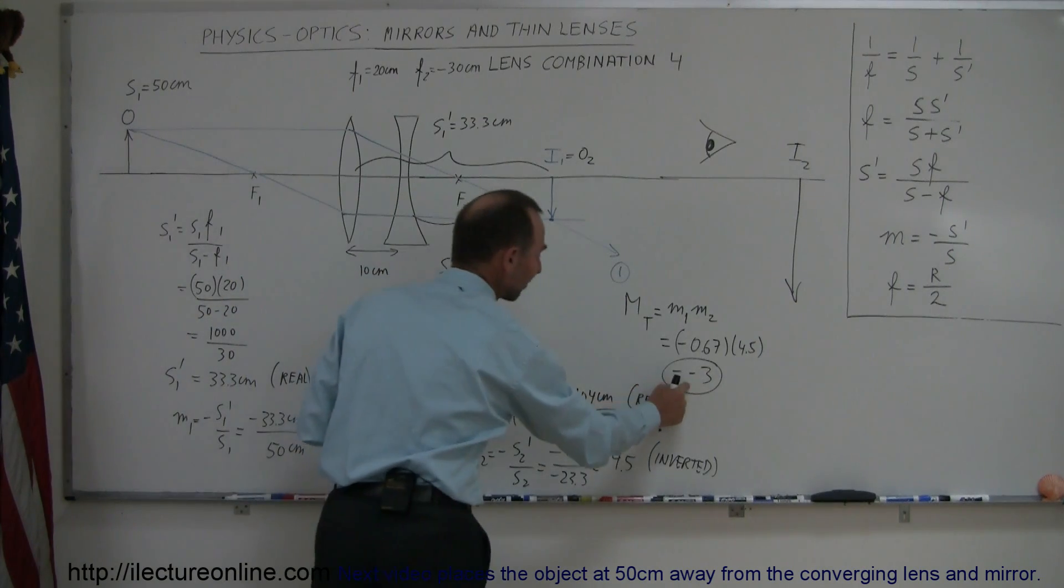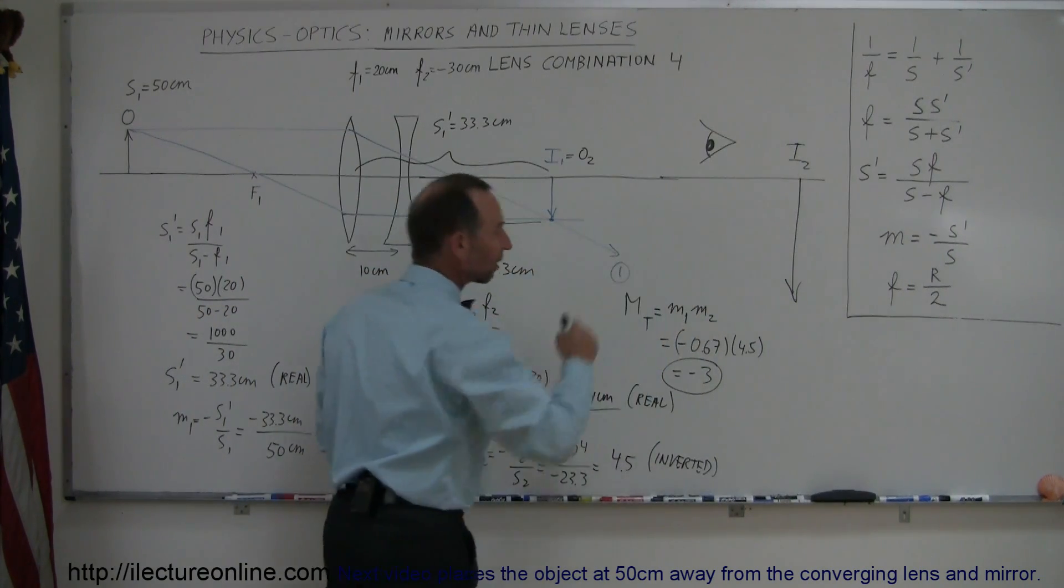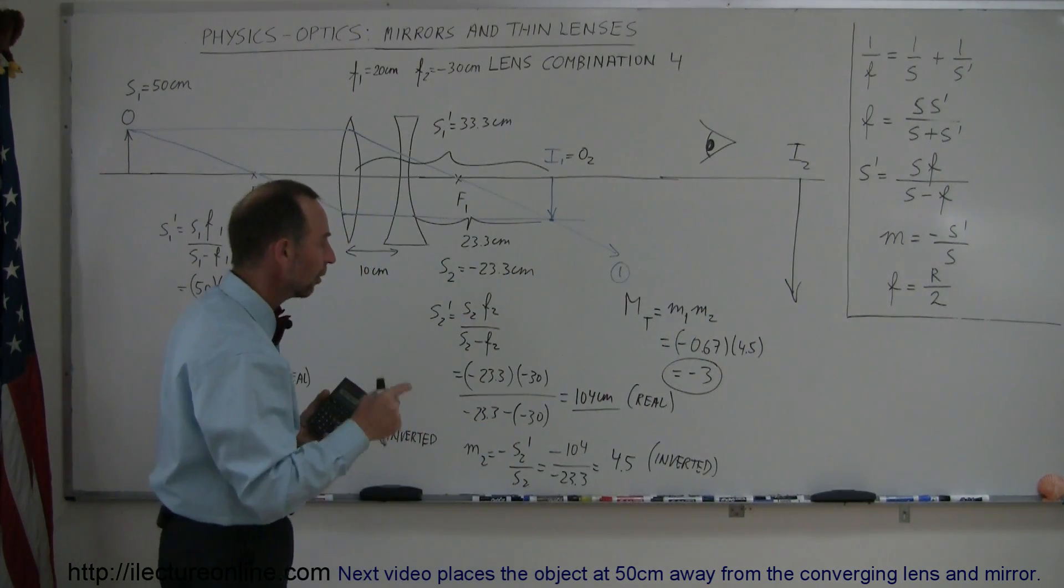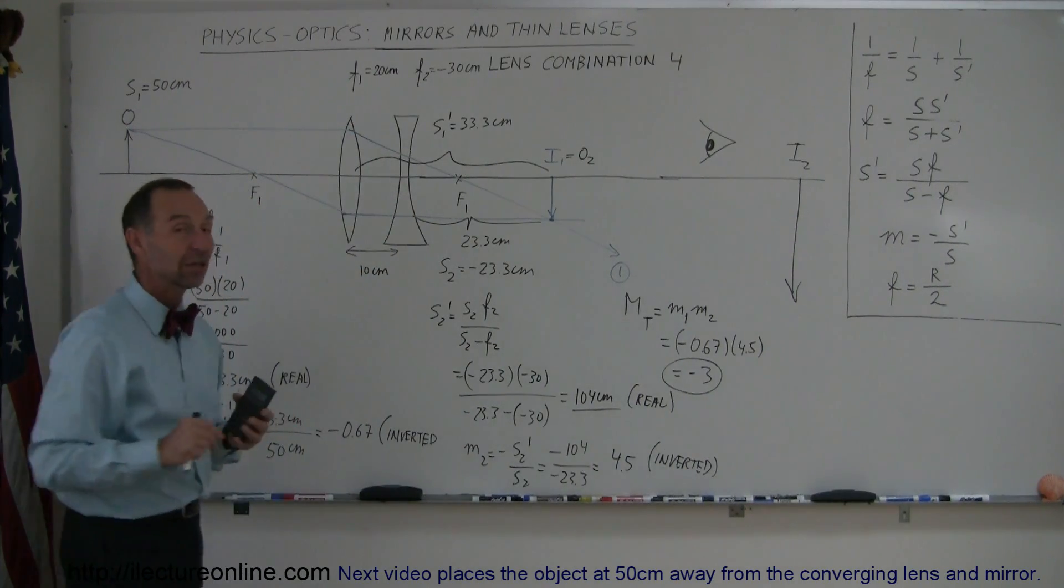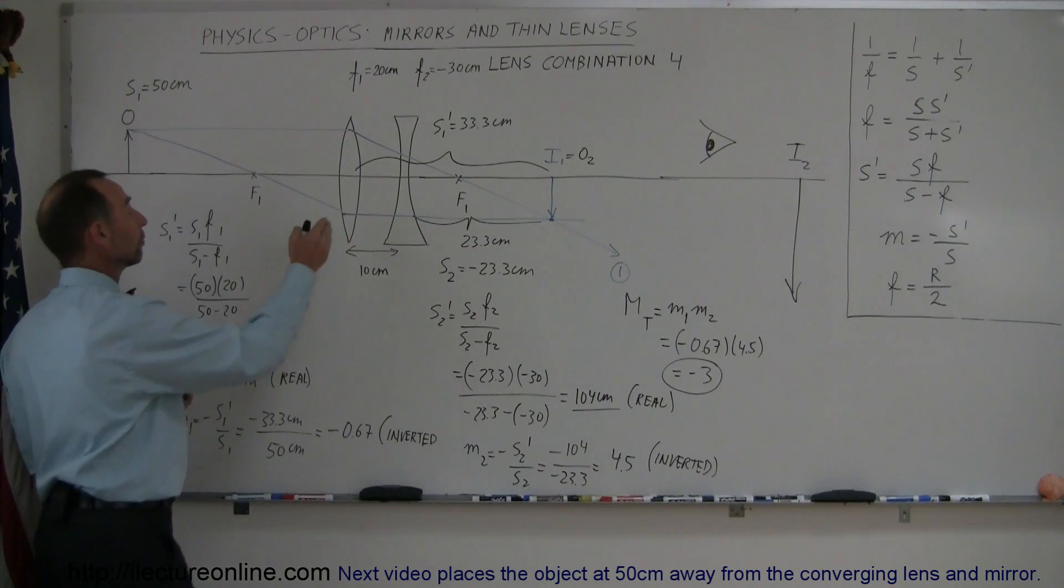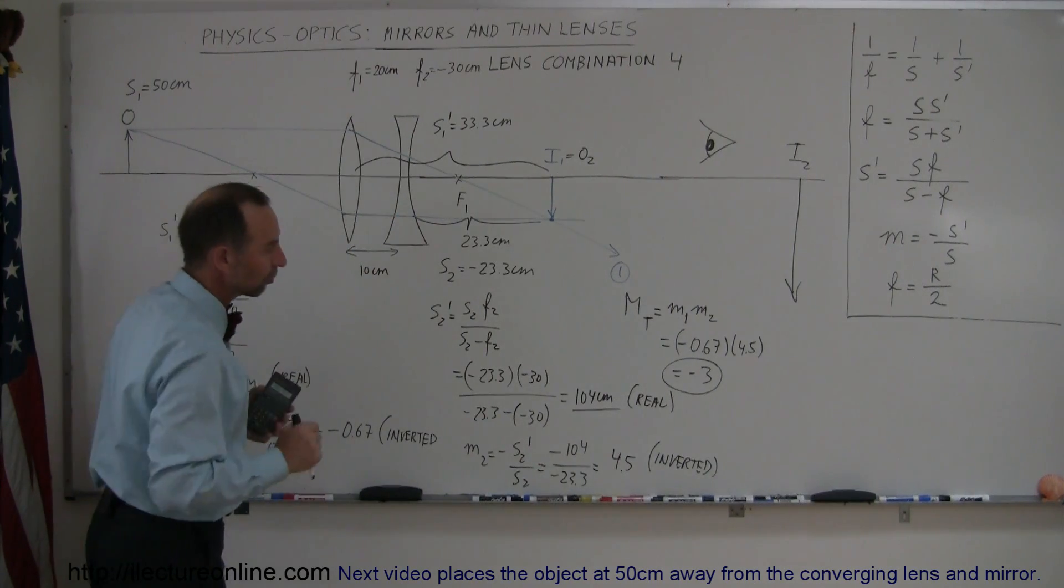Since it's negative, that means the image direction is upside down or inverted relative to the original object. And that's how you do a combination like this where you have both a converging lens and a diverging lens.